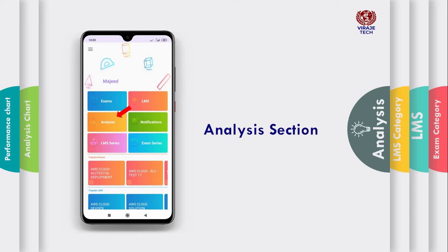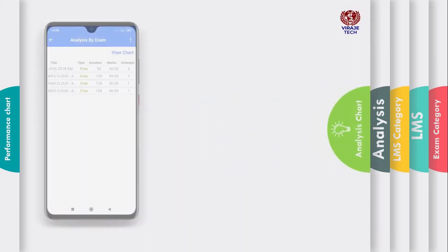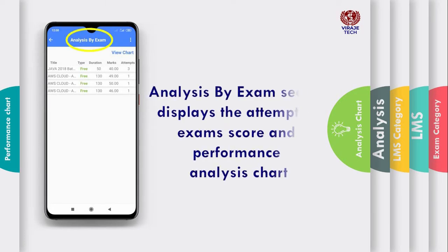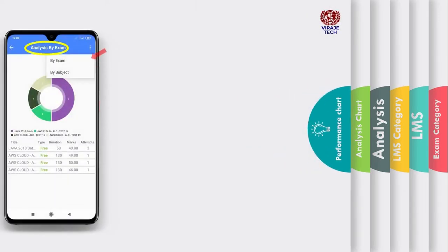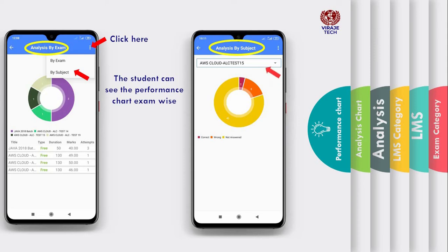Analysis section. Analysis by Exam section displays the attempted exam score and performance analysis chart. Click on View Chart. Click here. The student can see the performance chart exam-wise or subject-wise.